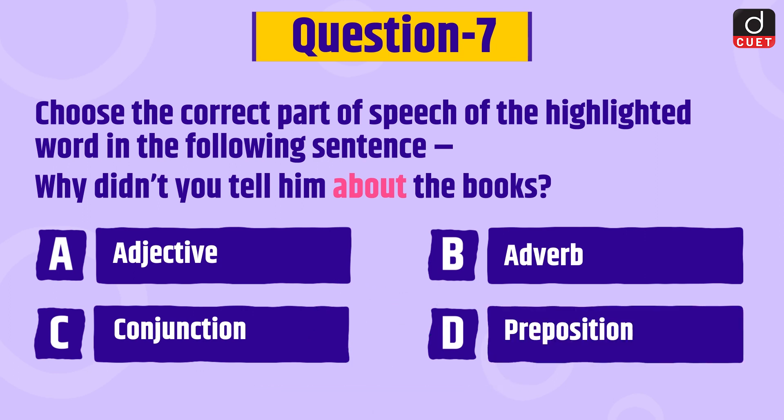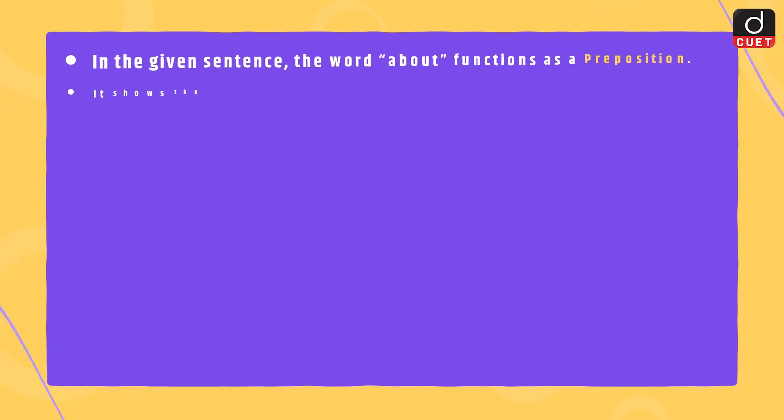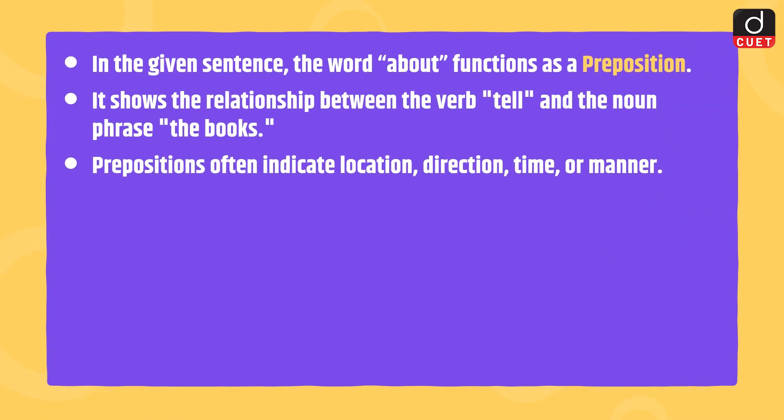The correct answer is option D, preposition. In the given sentence, the word about functions as a preposition. It shows the relationship between the verb tell and the noun phrase the books. Prepositions often indicate location, direction, time or manner.